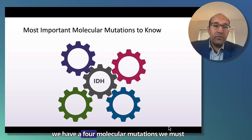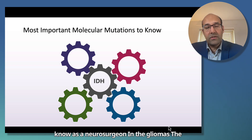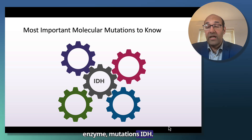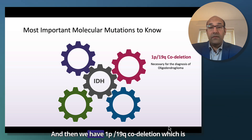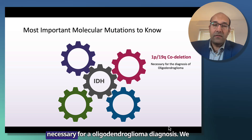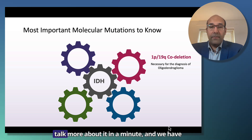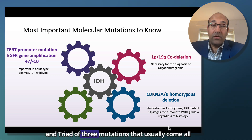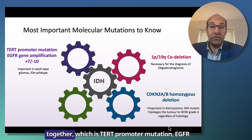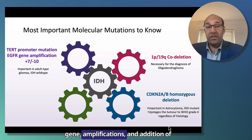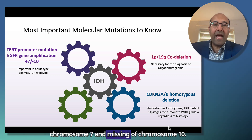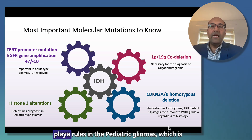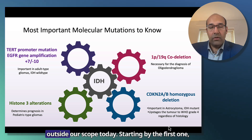As I said, we have four molecular mutations we must know as a neurosurgeon in gliomas. The first and most central is the isocitrate dehydrogenase enzyme mutation — IDH. Then we have 1p19q codeletion, which is necessary for oligodendroglioma diagnosis. We also have CDKN2A/B homozygous deletion, and a triad of three mutations that usually come together: TERT promoter mutation, EGFR gene amplification, and gain of chromosome 7 with loss of chromosome 10. Histone 3 alterations are mainly relevant in pediatric gliomas, which is outside our scope today.